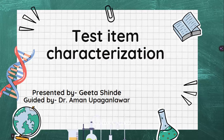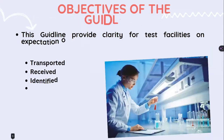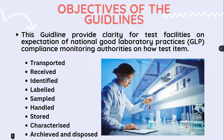This test item characterization provides us basic objectives. These guidelines provide clarity for the test facility on expectations of national Good Laboratory Practices (GLP) compliance monitoring authorities — on how the test item is transported, received, identified, labeled, sampled, handled, stored, characterized, archived, and disposed.